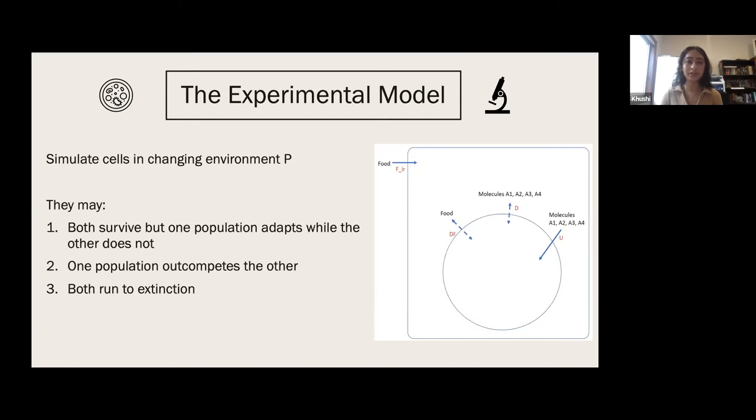One option is both populations survive, two, one outcompetes the other, or three, both run extinct.